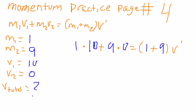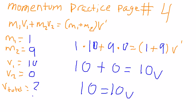Then you get 1 times 10, which is 10, plus 9 times 0, which is 0, equals 10V. And then you get 10 equals 10V, and then you get V equals 1 meters per second.